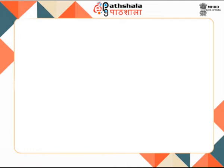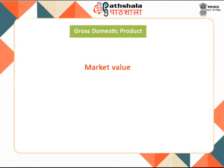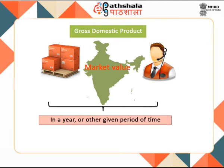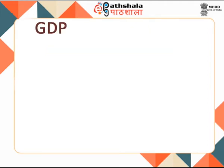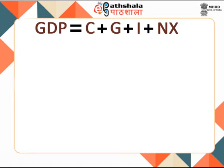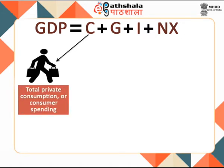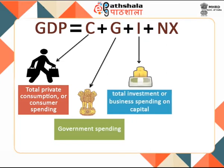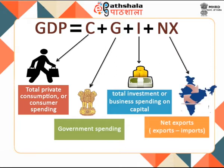Gross domestic product is the market value of all officially recognized final goods and services produced within a country in a year or other given period of time. GDP equals C plus G plus I plus NX, where C is total private consumption or consumer spending, G is total government spending, I is total investment or business spending on capital, and NX is the nation's total net exports calculated as total exports minus total imports.